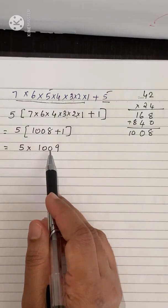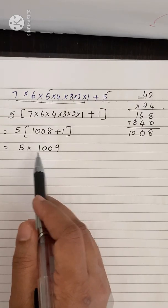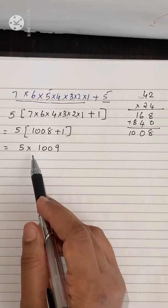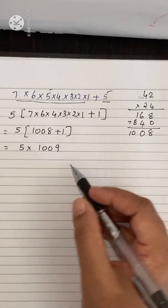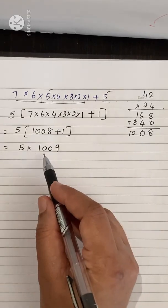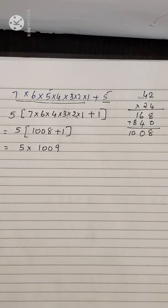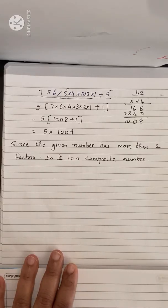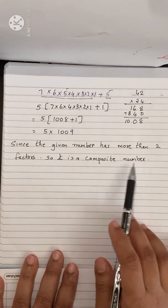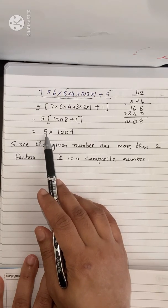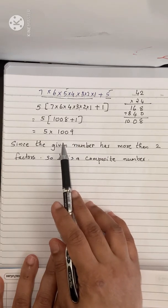Here 1009 is a prime number, so its only factors are 1 and 1009. And 5 is also a prime. So this number can be written as a product of two primes — giving more than two factors: 1, 5, 1009, and the number itself. Since the given number has more than two factors, it is a composite number.